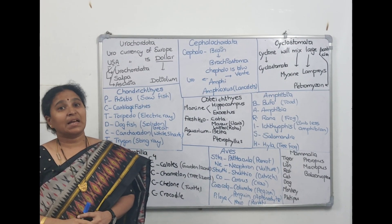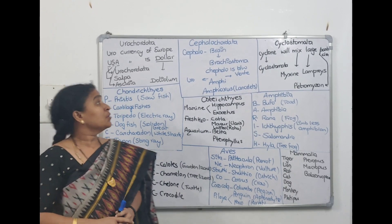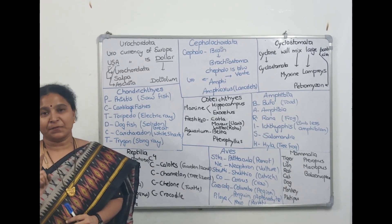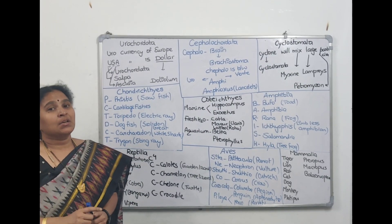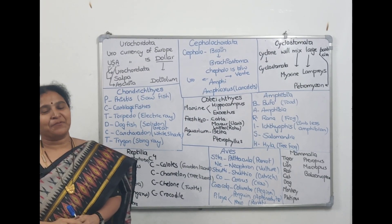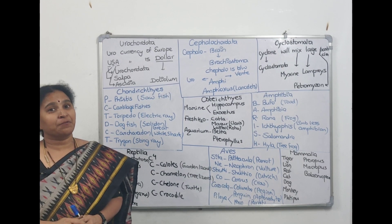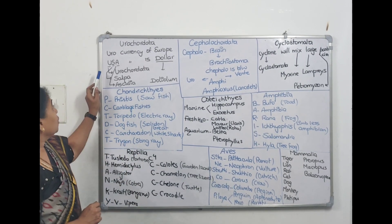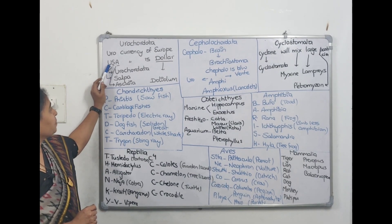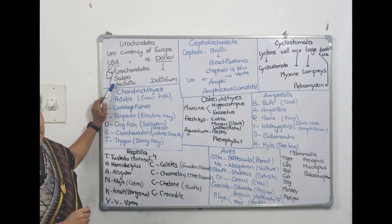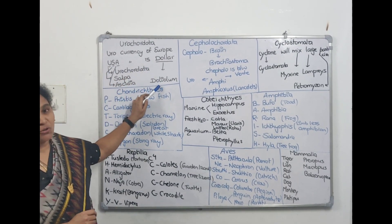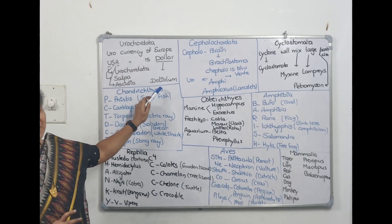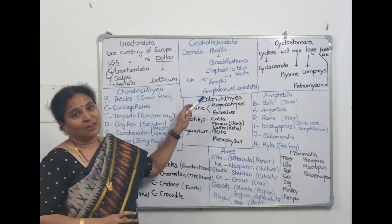This is the course for memorizing the examples of the phylum Chordata. Under Chordata, it is divided into Urochordata, Cephalochordata, and Vertebrata. To memorize the examples of Urochordata: Euro is the currency of European countries and the USA currency is dollar. So U for Urochordata, S for Salpa, A for Ascidia — and Dollar means Doliolum. With that, Urochordata examples can be remembered.